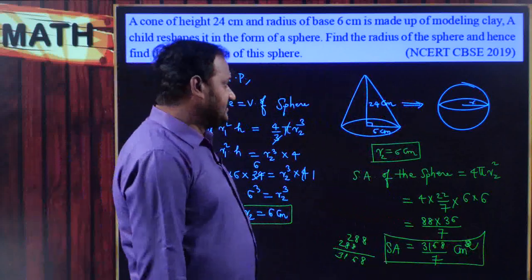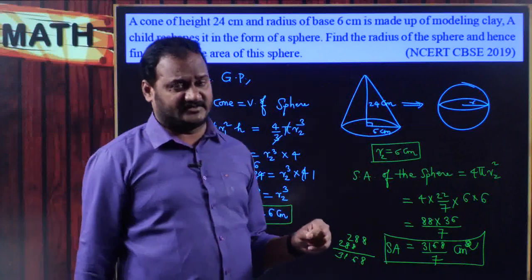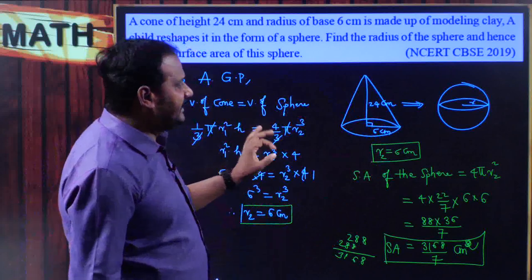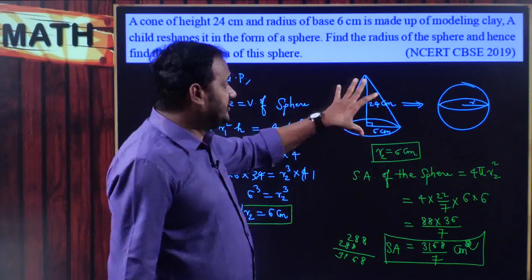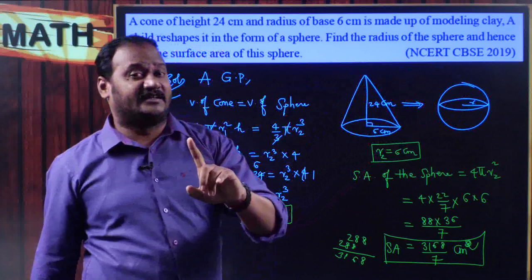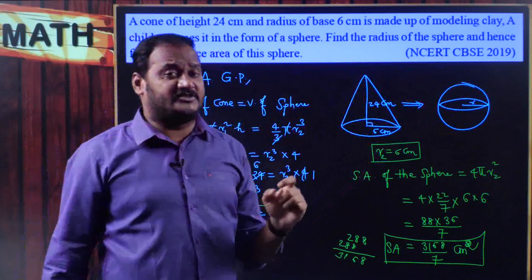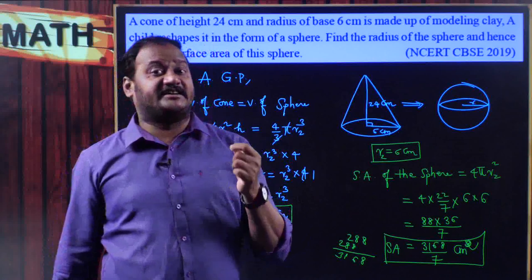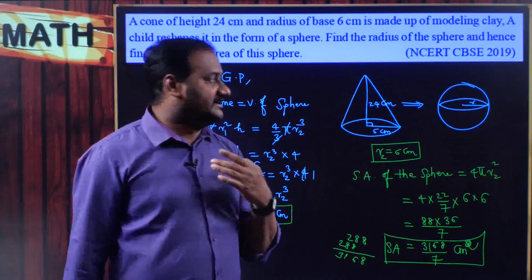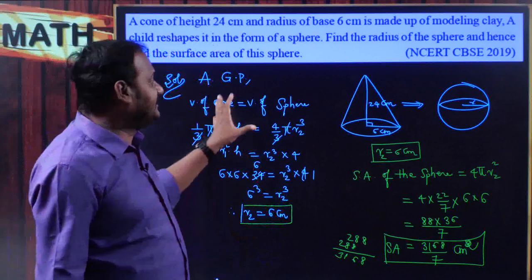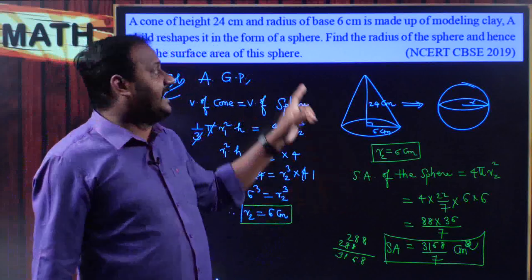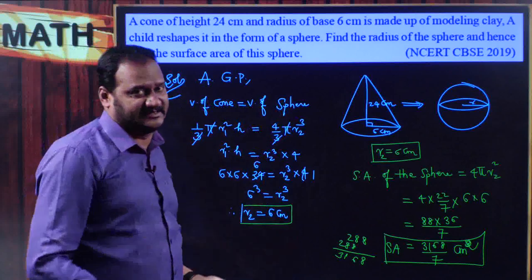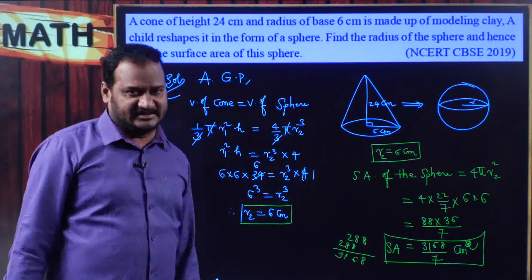The basic idea behind answering this problem is that one quantity transforms into another, so volumes remain unchanged. Do not calculate the volumes individually — equate the volume of the cone with the volume of the sphere directly so that cancellations happen in one go, and you will get the answer easily.